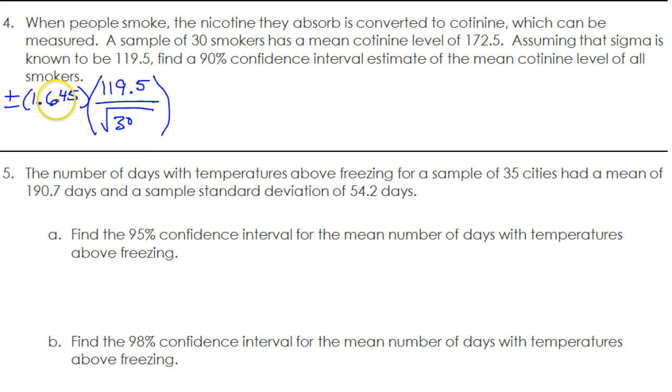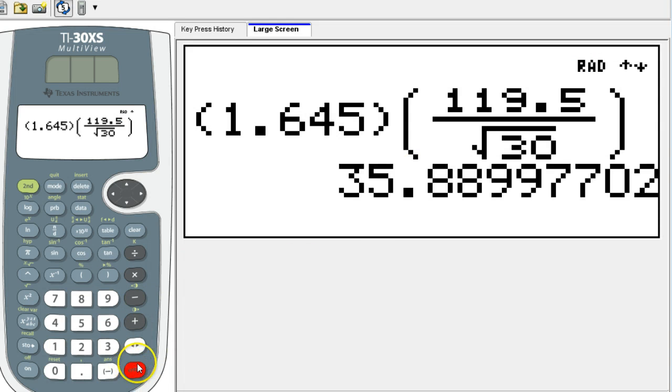So here's the setup. It's the z-score times the standard deviation divided by the square root of the sample size. They said a sample of 30 smokers. So we're just going to put this in our calculator. 35.89.